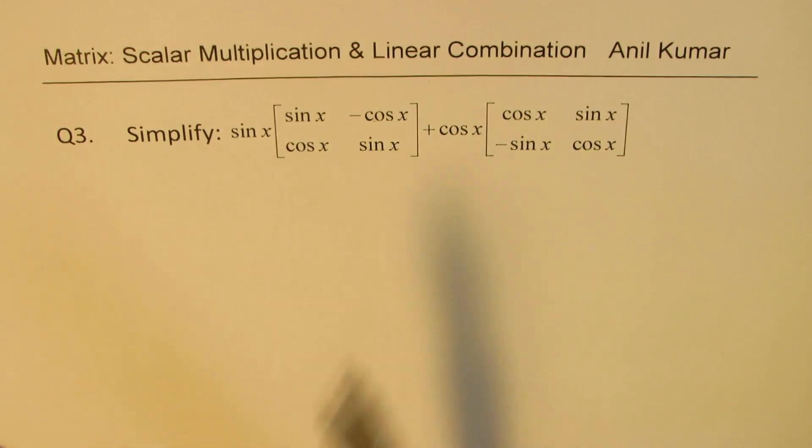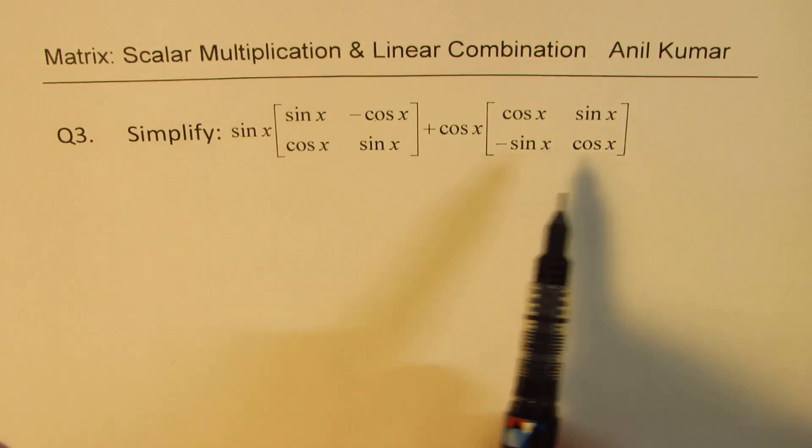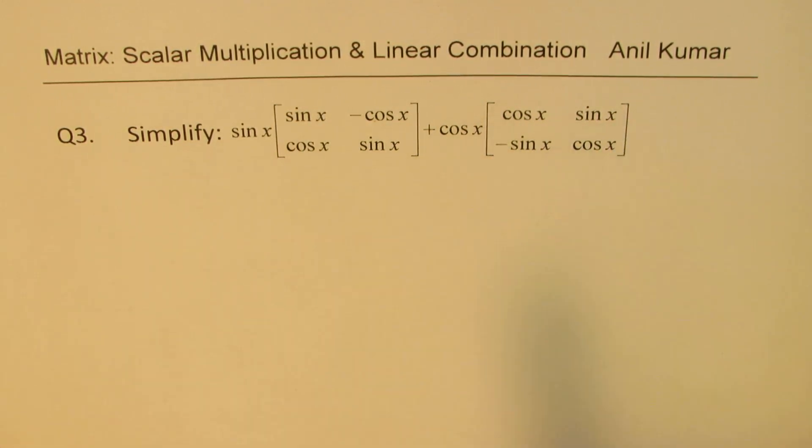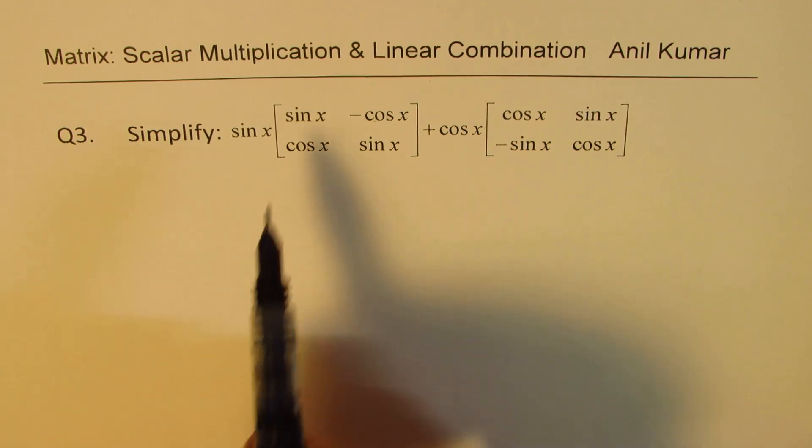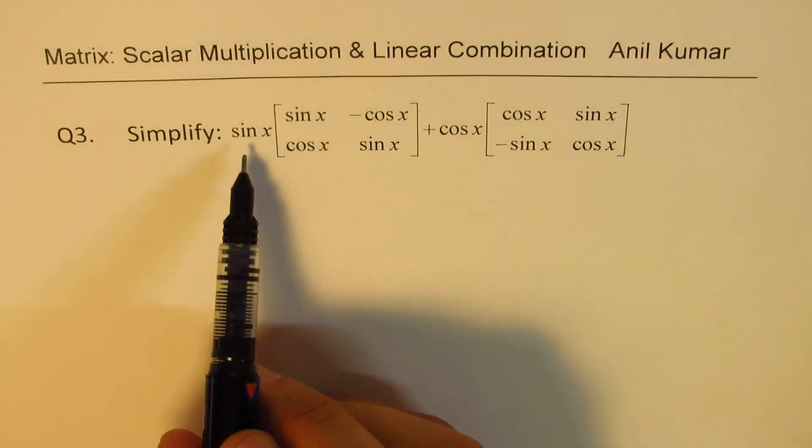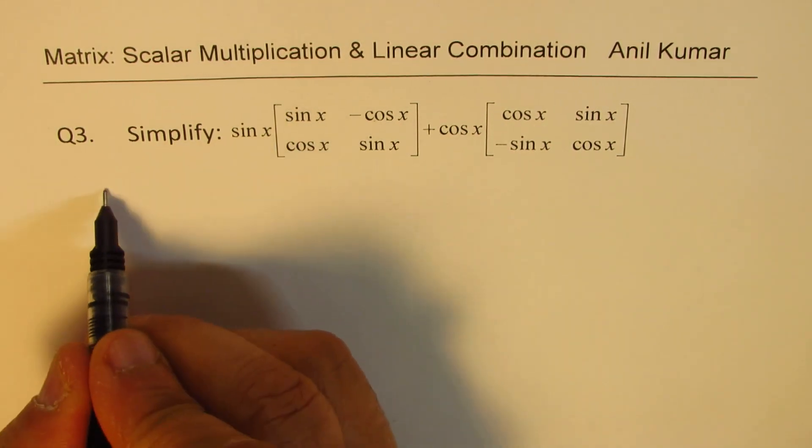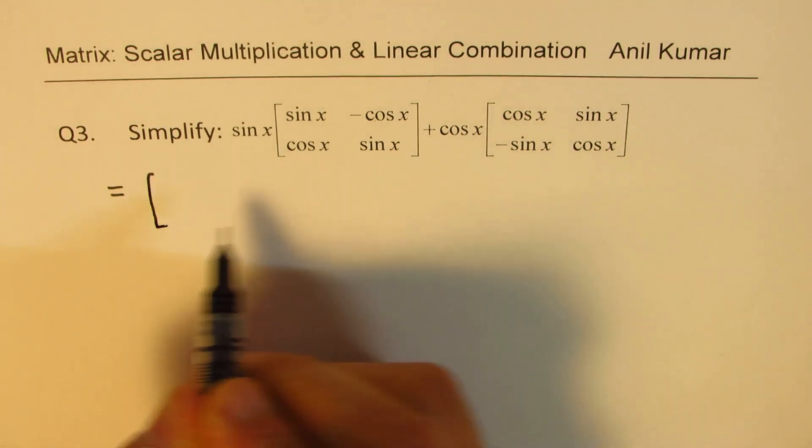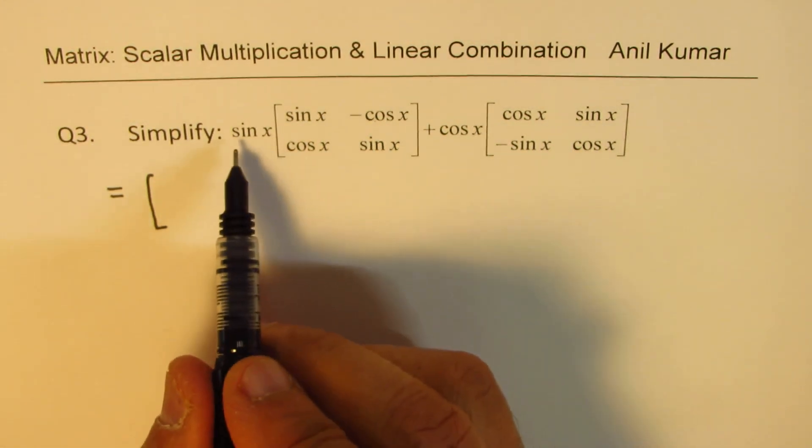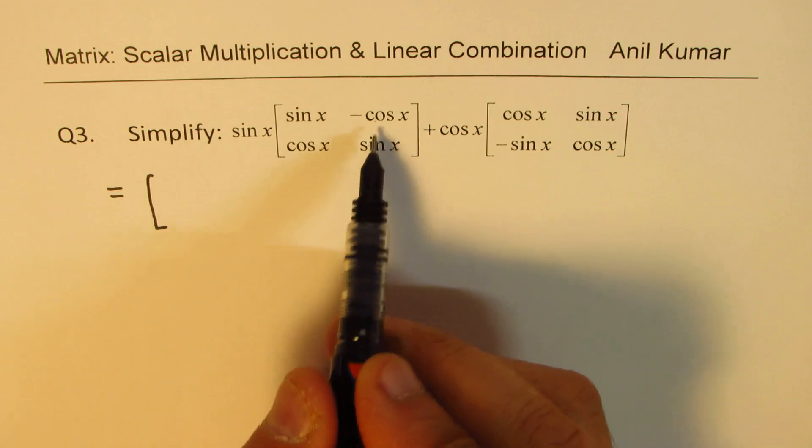Now let's take more examples based on this linear combination. As I was saying we could work with trigonometric ratios. So here we have sines and cosines and we'll see the combination, linear combination. Linear doesn't really mean here that you get a linear equation.